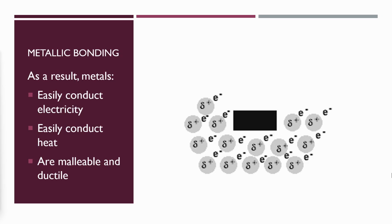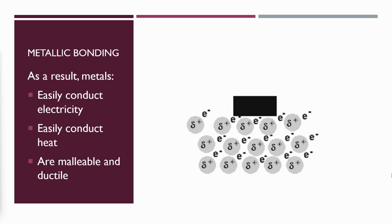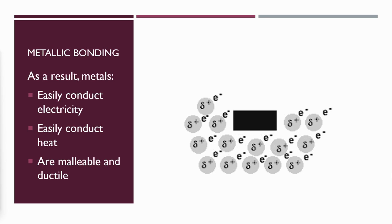Metals are also ductile, which means that you can pull on them and the atoms will stretch out into a thin wire. This has to do with the sea of electrons being able to be shared between neighboring atoms, regardless of the location of those atoms.